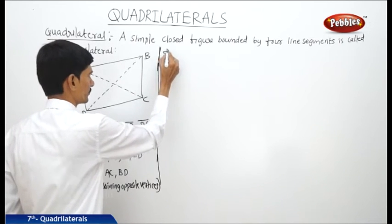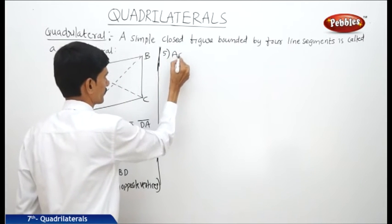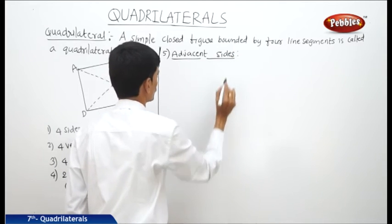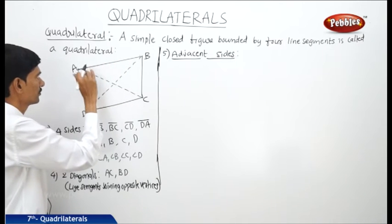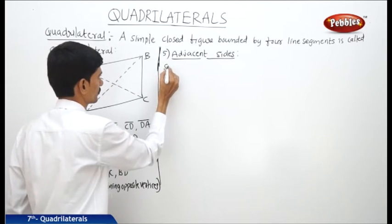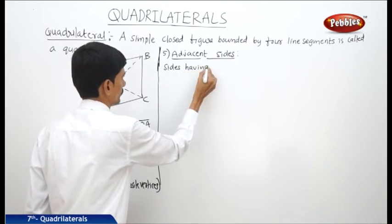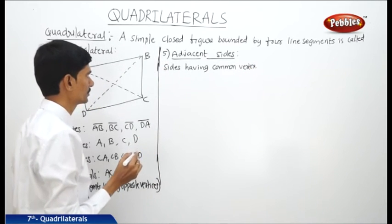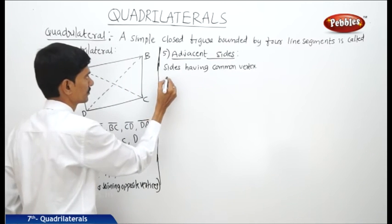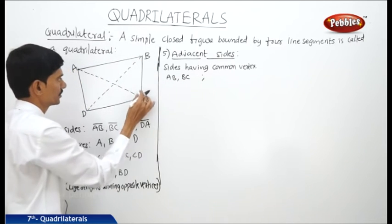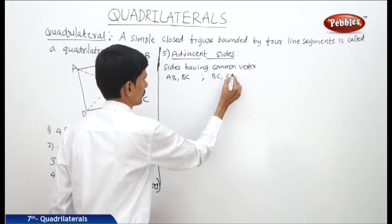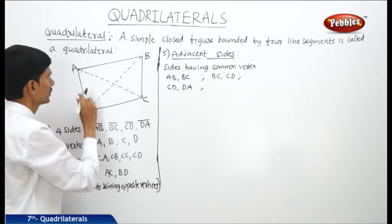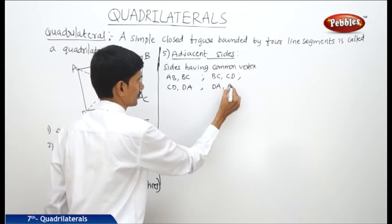Now let us write the next part: adjacent sides. Adjacent sides means the sides which have a common vertex are called the adjacent sides. The sides having a common vertex are AB and BC, BC and CD, CD and DA, and DA and AB.